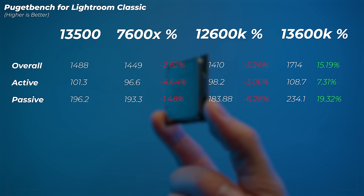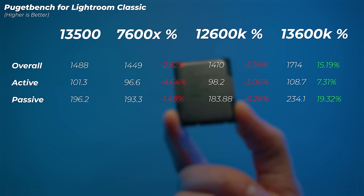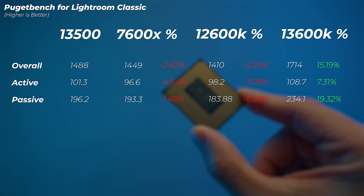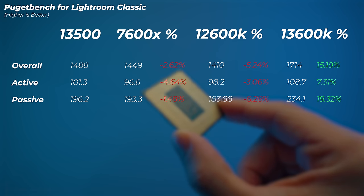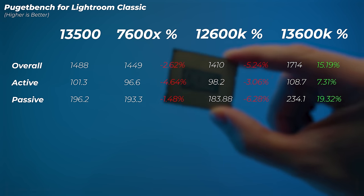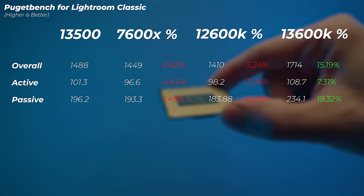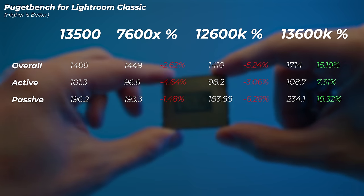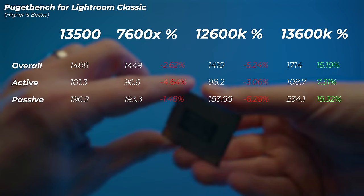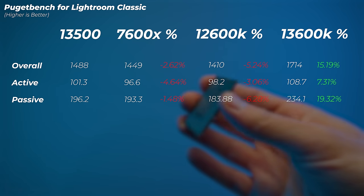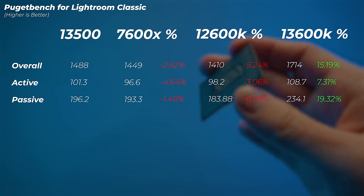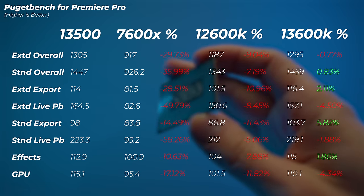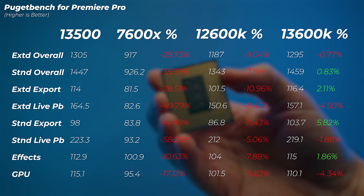In Lightroom Classic, the 7600X is actually slower — about 2–4.5% slower — because single-core performance matters less here, even though the active score is still related to single-core. The 12600K is about 3–6% slower. The 13600K is about 7–20% faster, with the passive export score being 20% faster — meaning the 13600K exports photos much faster than the 13500.